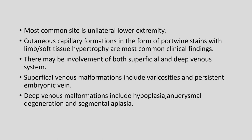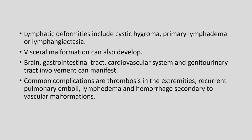The most common site is the unilateral lower extremity. Cutaneous capillary malformations in the form of port-wine stains with limb soft tissue hypertrophy are the most common clinical findings. There may be involvement of both superficial and deep venous systems. Superficial venous malformations include varicosities and persistent embryonic vein. Deep venous malformations include hypoplasia, aneurysmal degeneration, and segmental aplasia. Lymphatic deformities include cystic hygroma, primary lymphedema, or lymphangiectasia.